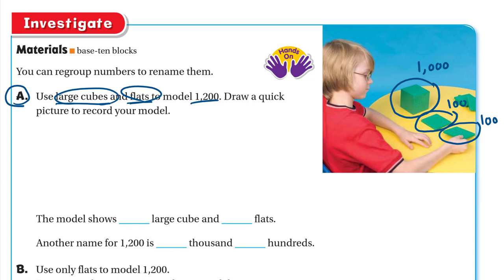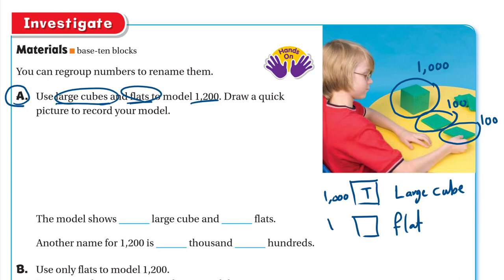To draw a quick picture, instead of drawing the real cube we draw a square and write the letter T — this represents the large cube, which is 1000. For the flat we draw a plain square, which is 100. For the long we draw just a line or stick, which represents 10. For the small cube or one, we draw a small circle or square.